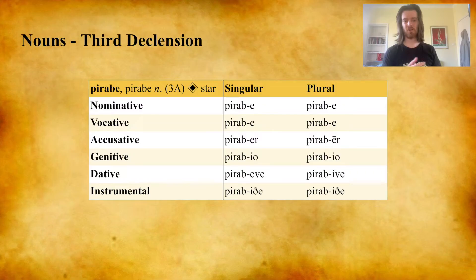Hi there guys, it's Narandil here. Today we're going to be continuing our Agere grammar series looking at nouns. Last time we looked at the first and second declensions and today we're going to be looking at the third and fourth declensions. So let's get stuck into it.